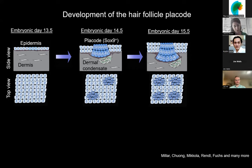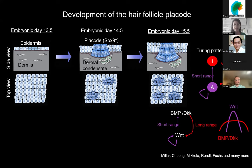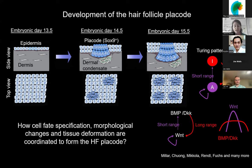A close interaction and communication between the dermal condensate and the epithelial compartment is required for hair follicle placode development. The signaling pathway involving this development has been extensively studied. It basically follows a Turing reaction-diffusion pattern where Wnt acts at short range to promote expression of its own inhibitor BMP-DKK1, which in turn at a longer range inhibits Wnt signaling, leading to a spatially patterned hair follicle placode throughout the entire skin. We think this development is an amazing paradigm to understand how phase transition, tissue deformation, and shape changes are coordinated.